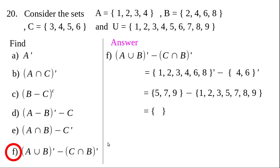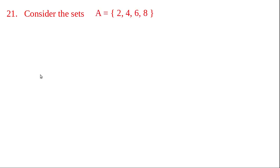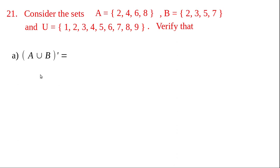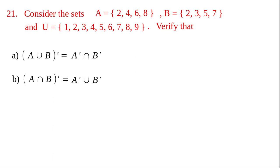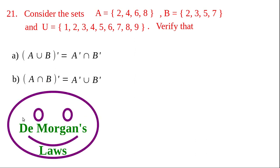Now question 21 — a very important question. Three sets are given. The question asks us to verify that (A union B) whole dash equals A dash intersection B dash, and (A intersection B) whole dash equals A dash union B dash. These are called De Morgan's Laws — two very important laws.